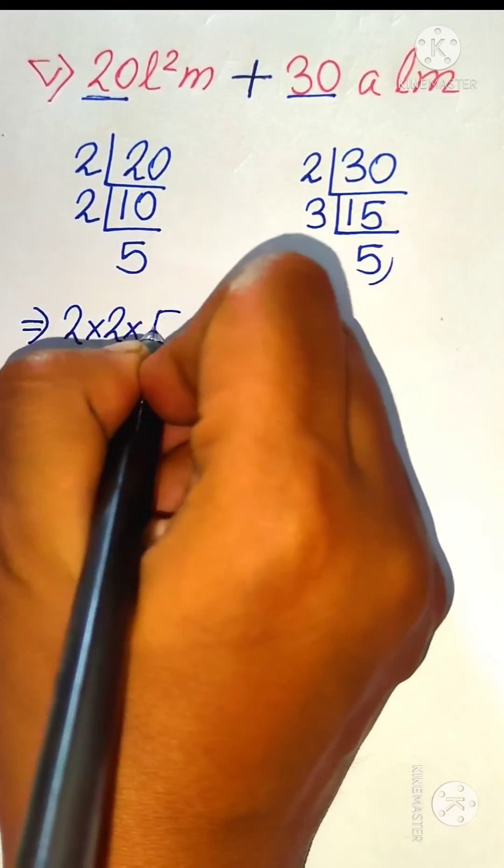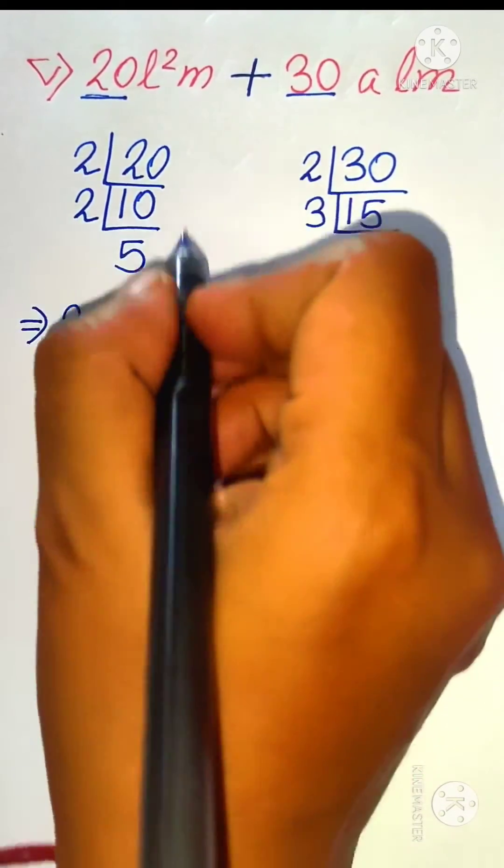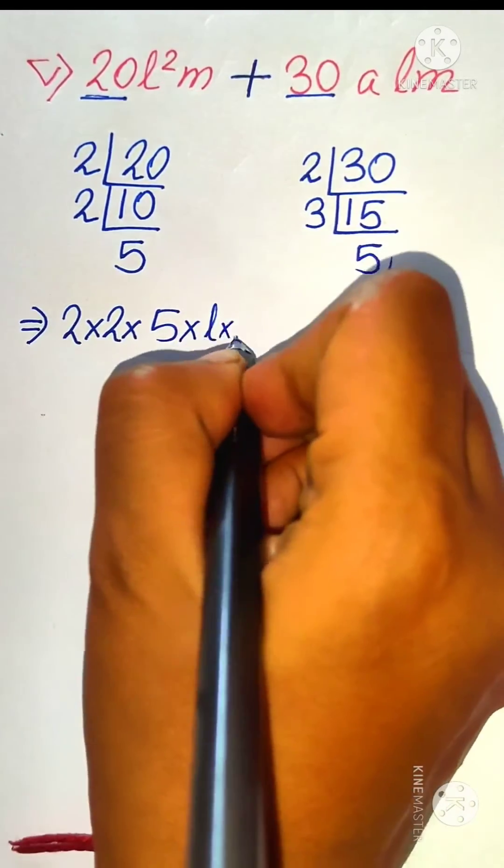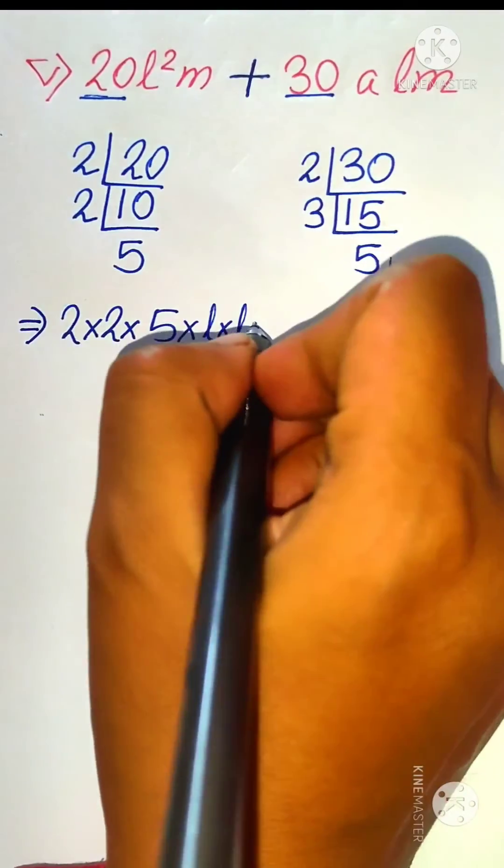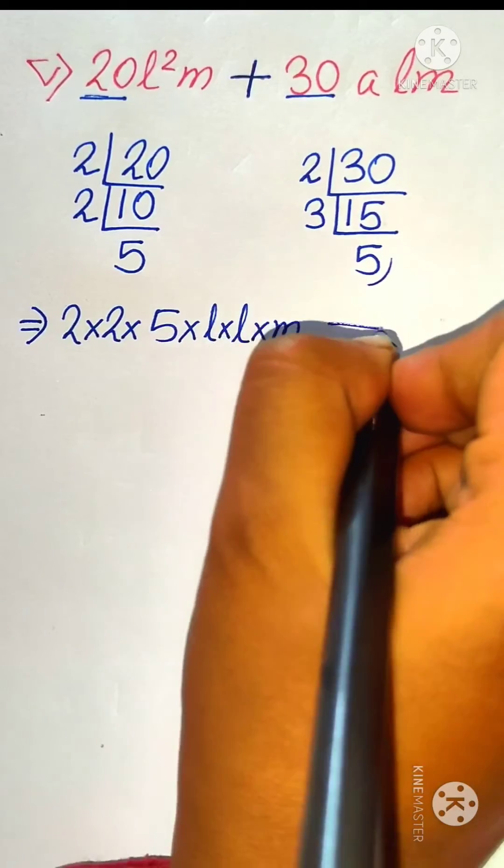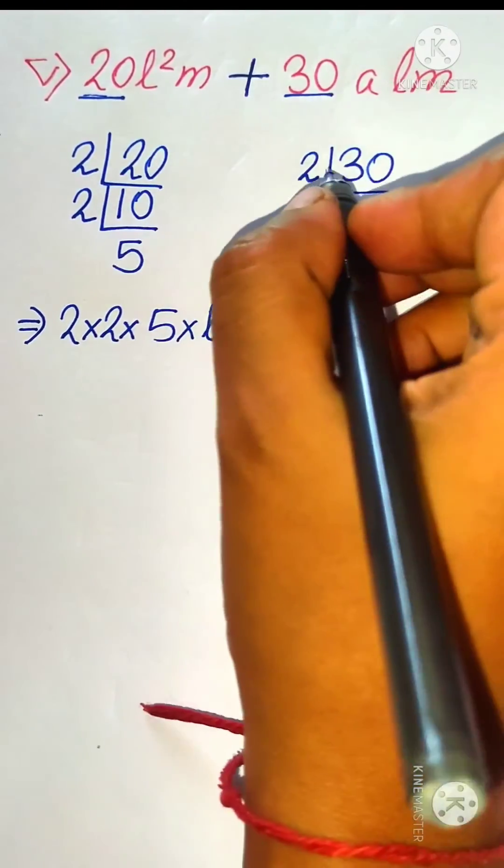As you can see, 2 times 2 times 5. We have l squared, that means l times l. Two times l into m, so we will write the separator that is plus.